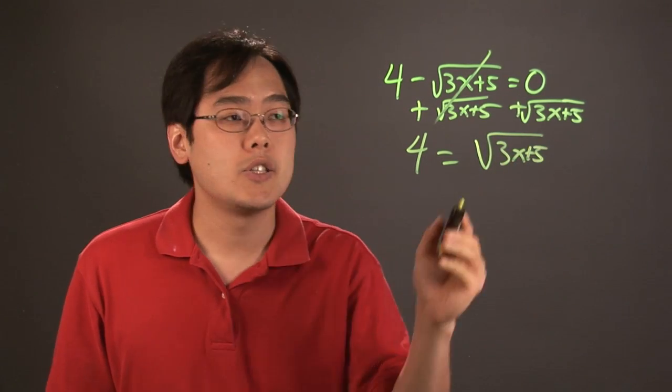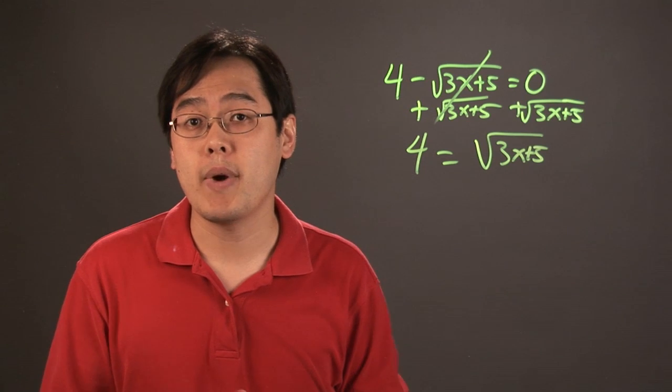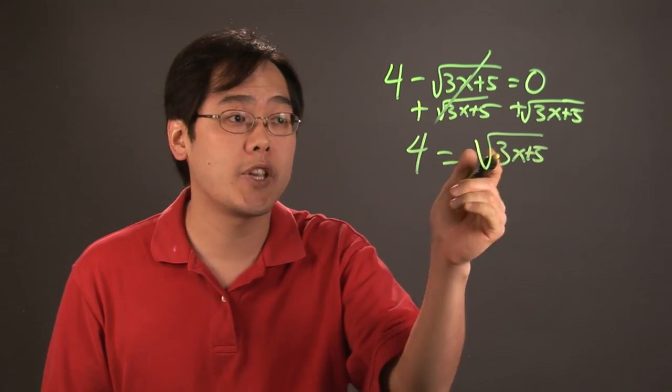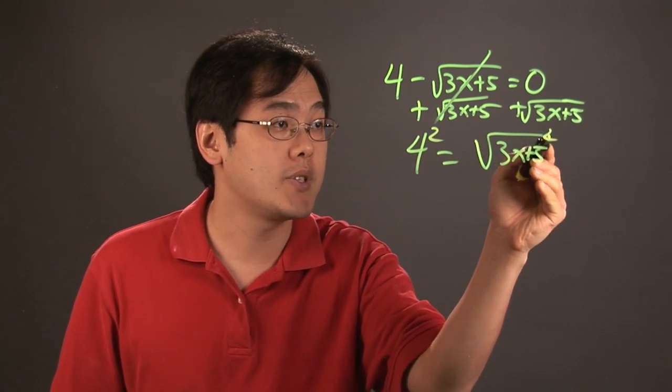Now, since you have a square root here isolated, you want to get rid of this square root by squaring both sides. If this was a cube root, you would cube both sides. So we're squaring both sides.